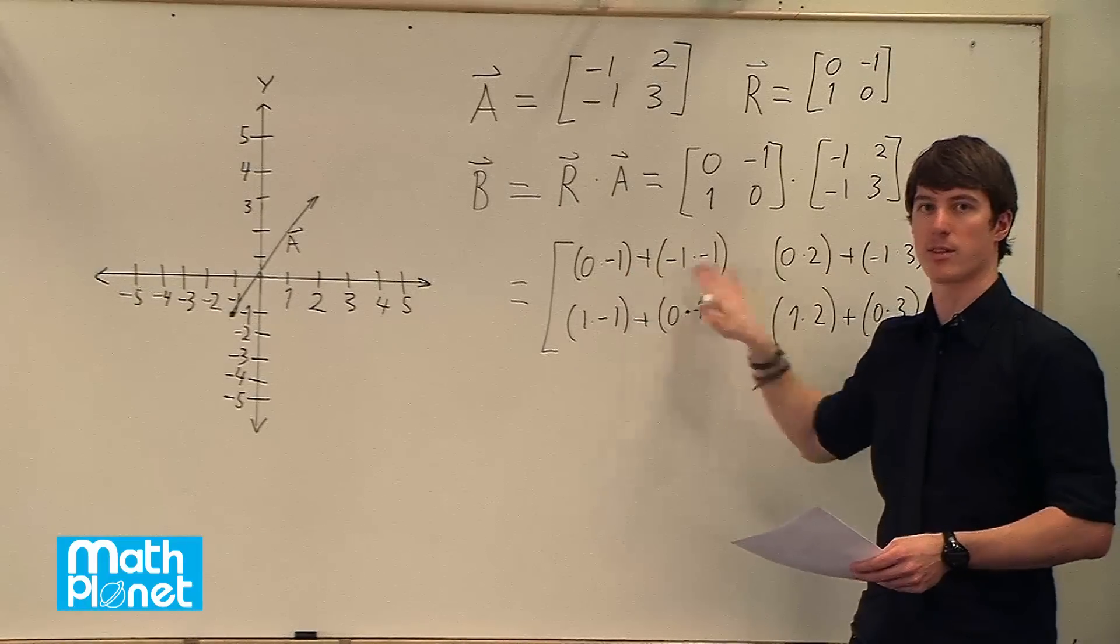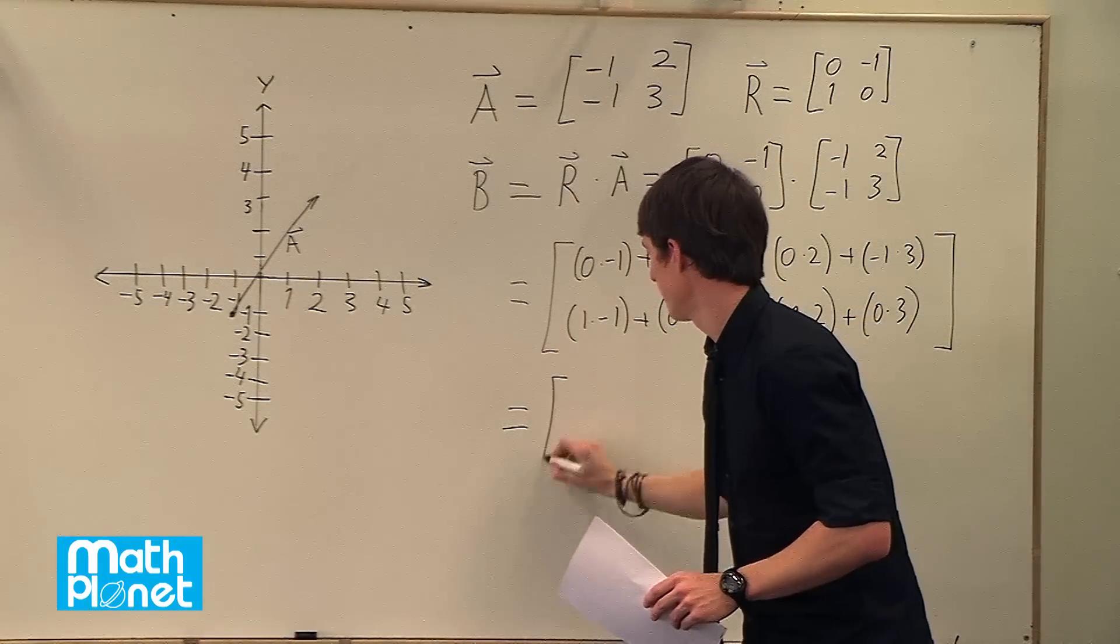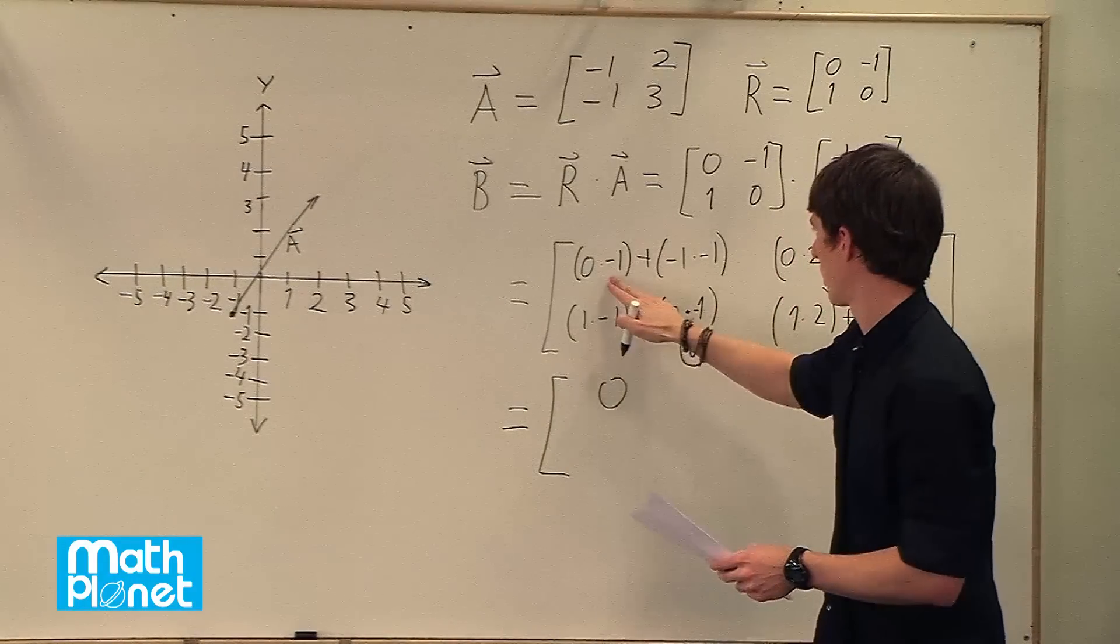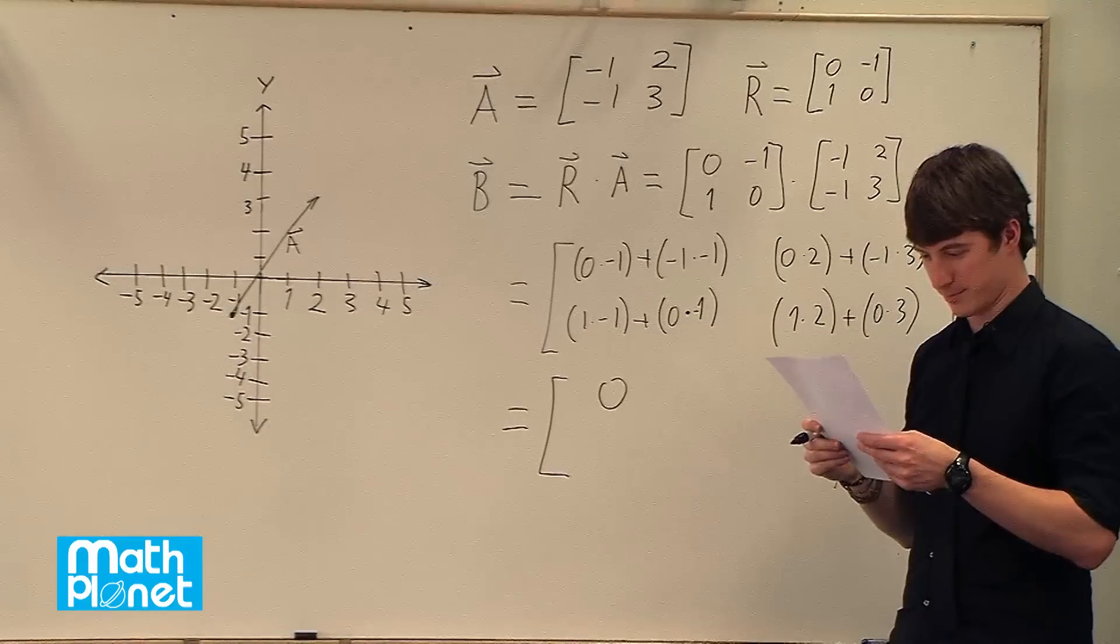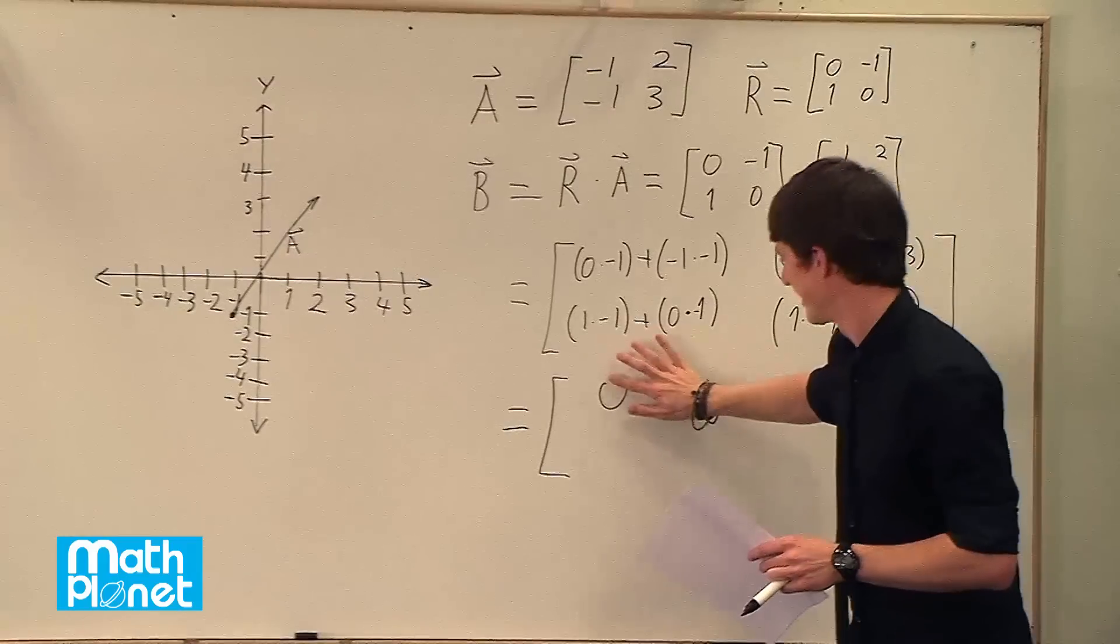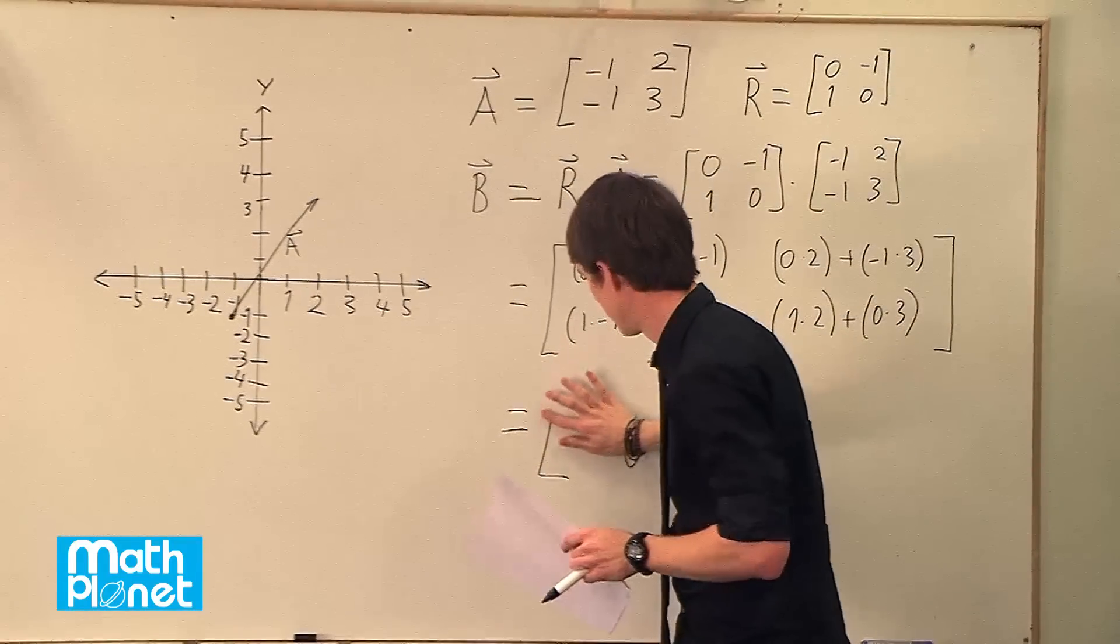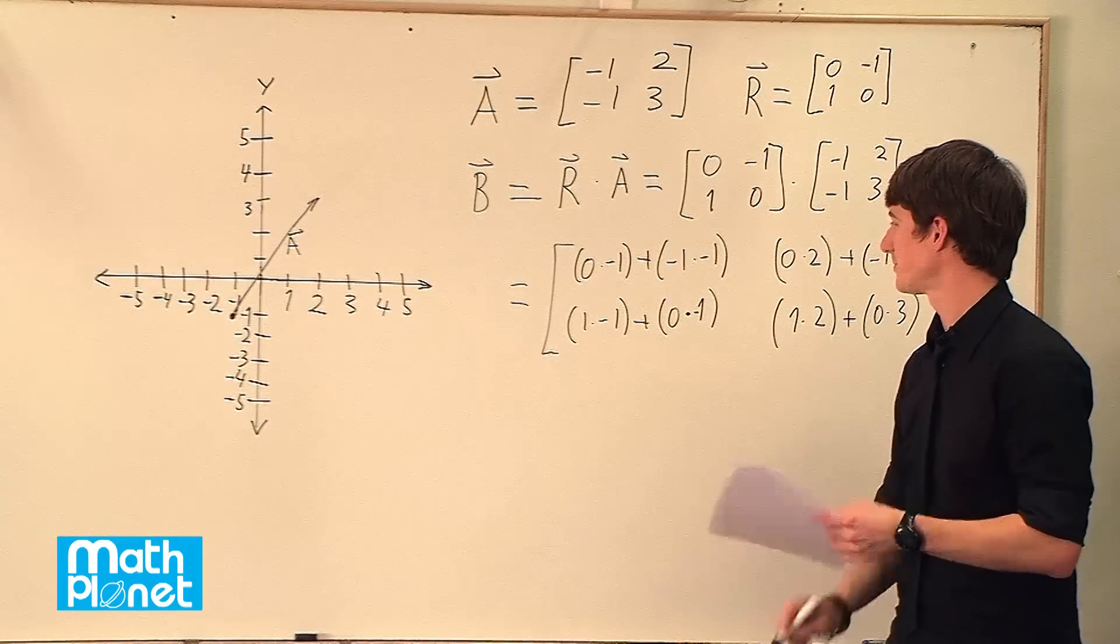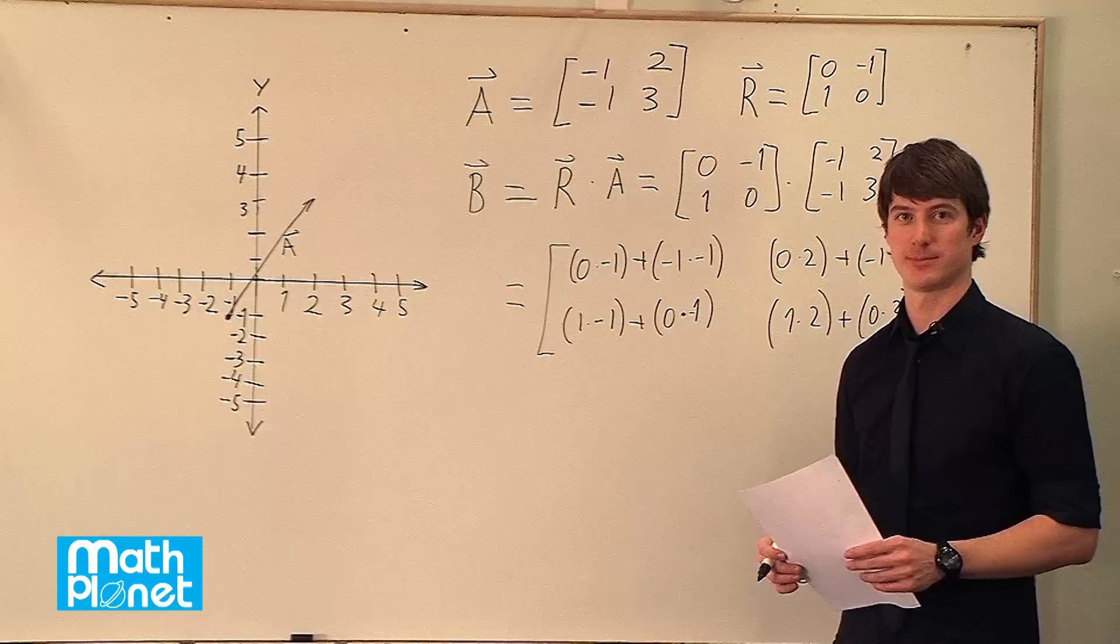And now we just need to multiply these, add, simplify, and we'll have our vector B. [Error correction and restart of simplification process]